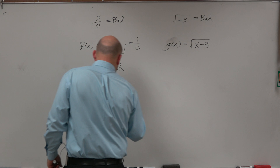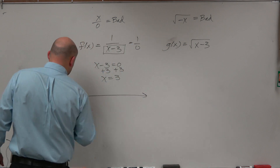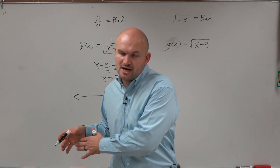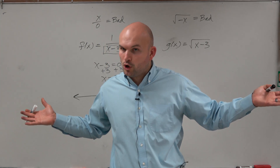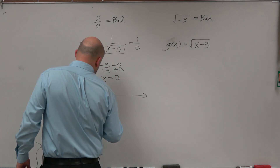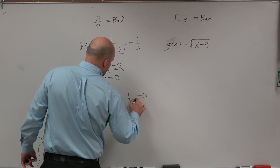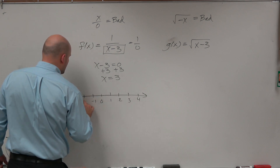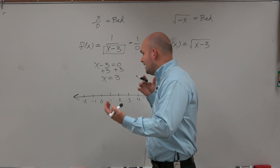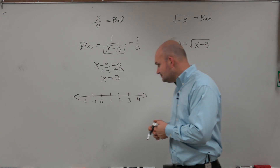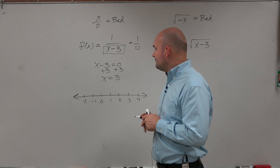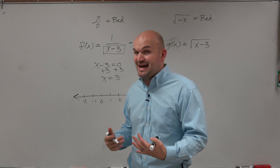For interval notation, we look at a number line representing all real numbers. This number line includes 0, 1, 2, 3, 4, negative 1, negative 2 — irrational numbers, all numbers, everything. The only number that is bad is 3, so I'm just going to put a little hole there. Every other number works: 2, one half, pi, 4, negative 0.1111 — all these numbers work except for 3.